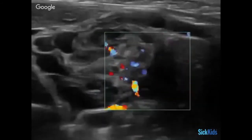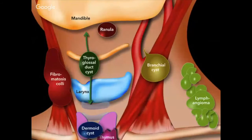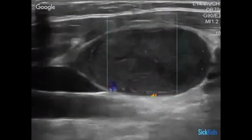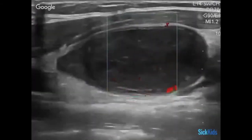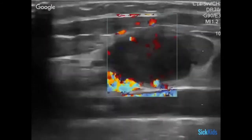Branchial cleft cysts — and this one is infected. We have lots of neck masses to consider: thyroglossal duct cysts, branchial cysts, dermoid cysts, and fibromatosis coli. Where things are located is important. Your physical exam still matters — taking things in context. But here are some examples of what these structures look like. This is a branchial cleft cyst that's infected.